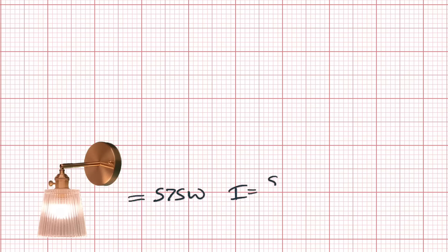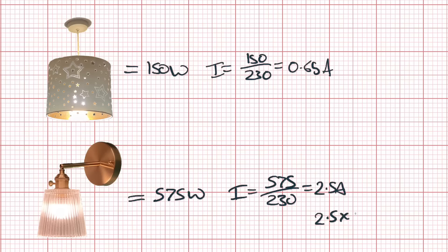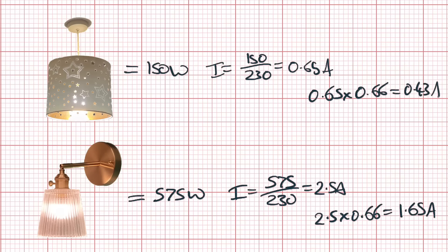On the ground floor we've got 575 watts of lighting, giving a current demand of 2.5 amps. On the first floor we've got just 150 watts, giving 0.65 amps of current. We take 66% of those values to contribute to our final maximum demand figure - that's 1.65 amps for the downstairs and 0.43 amps for the upstairs.